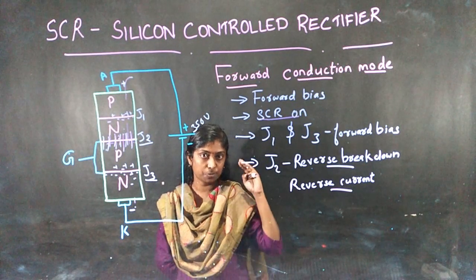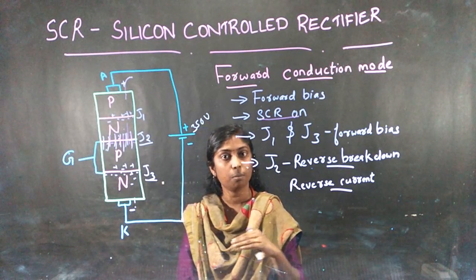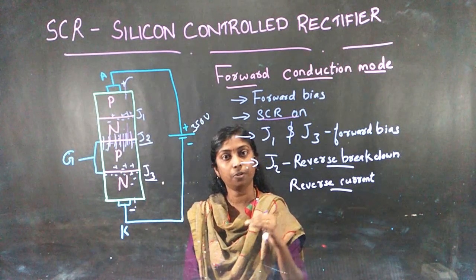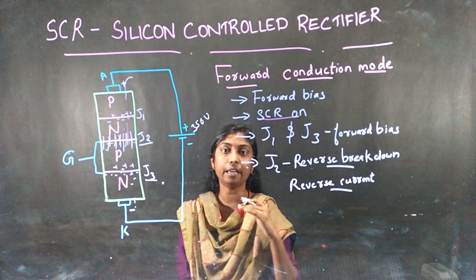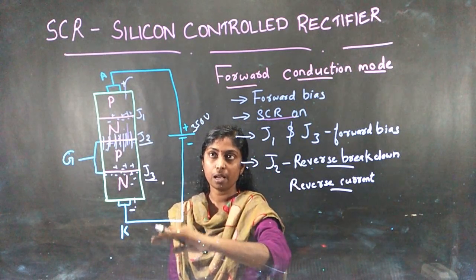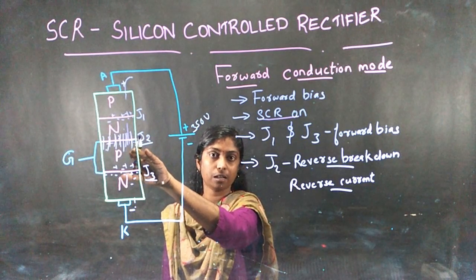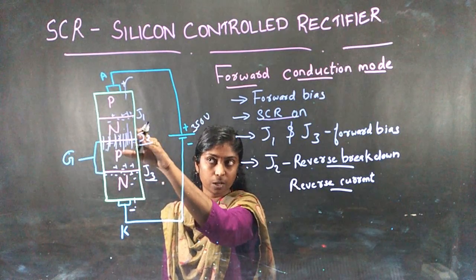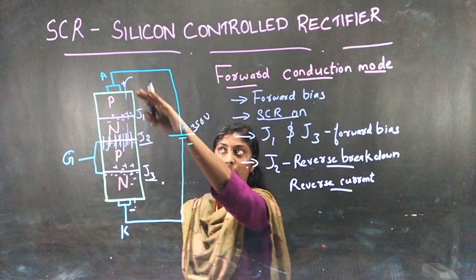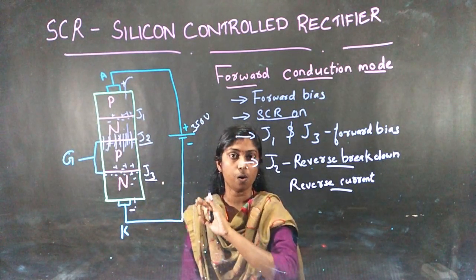Starting, it was forward blocking — in forward blocking, forward bias was given but SCR was in the off state. But in the case of forward conduction mode, we are giving a high voltage across anode and cathode. As a result of the high voltage, breakdown is happening in J2 junction. Reverse breakdown is happening and current is flowing through anode and cathode, so it is in the on state.